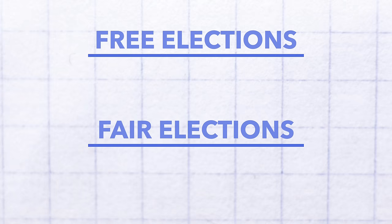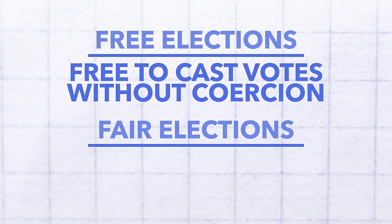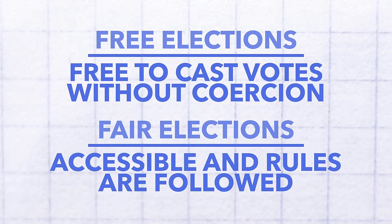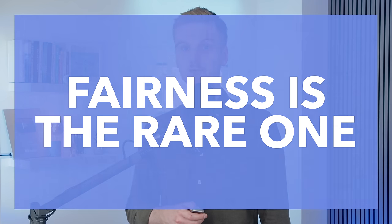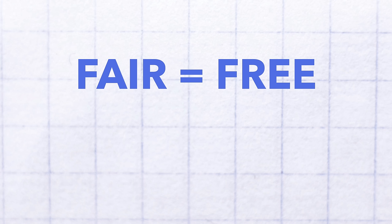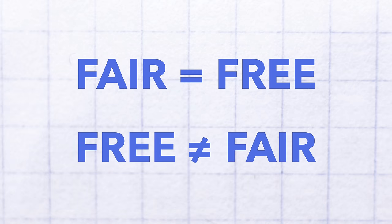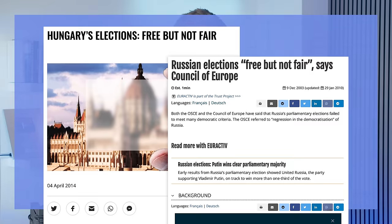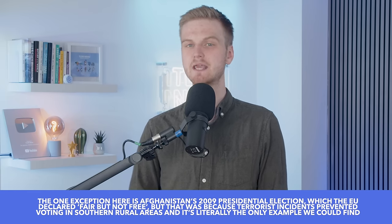There's no universally accepted definition of either free or fair, but broadly speaking, free elections are elections where voters are free to cast votes without coercion, and fair elections are those where all the various groups and individuals have similar opportunities, and the rules of the election are applied consistently. Because both these notions are fuzzy, there's some overlap, but most people agree that fairness is a more demanding standard than freedom. Generally, all fair elections will also be free, but not all free elections will also be fair. This is why we sometimes hear about elections being free but not fair — for example, in Hungary and Russia — but you don't really hear about elections being fair but not free.